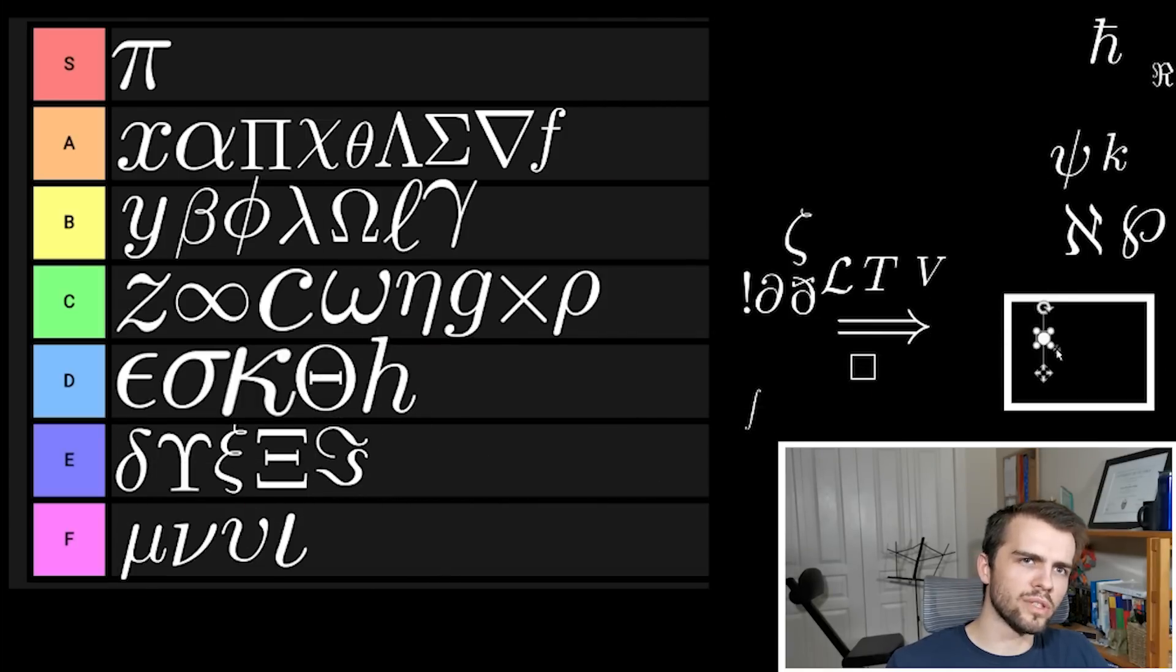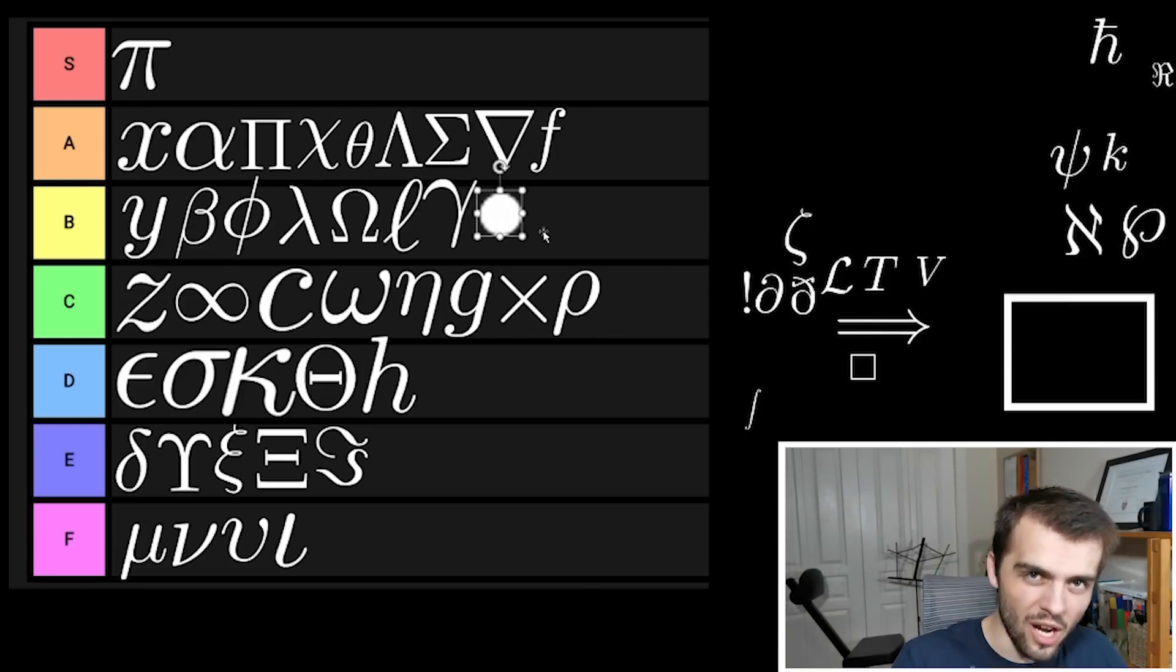Oh we got the dot product. The dot product is beautiful, just a nice dot. I'm going to have to put the dot product as B tier. It's easy to compute. It's nice. It's just a dot.